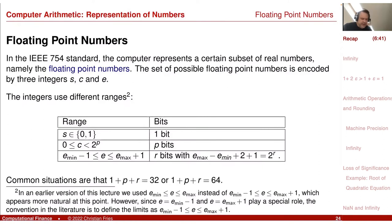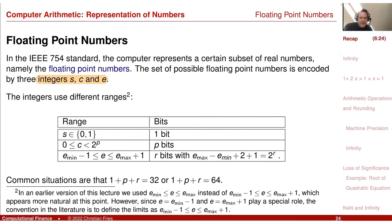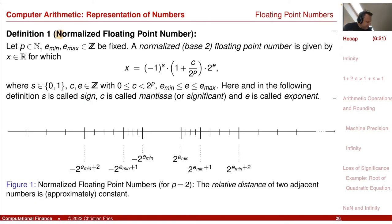As a recap, we use three integers to represent these numbers: the sign s, the value c, and an exponent e specifying the scale. There were three parts of the definition. The first part was the normalized floating point numbers. There is the sign in front, then some value between one and two, and the exponent two to the power of e, where e comes from e_min to e_max.